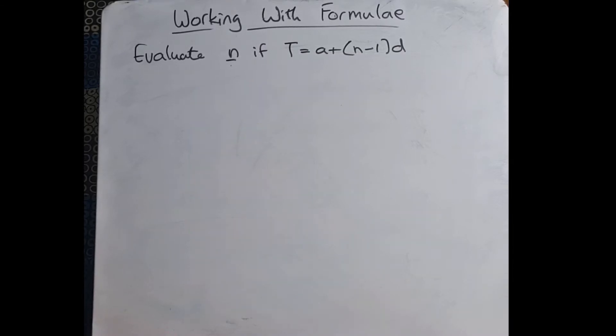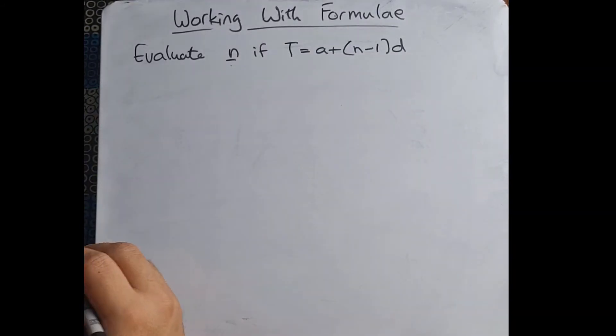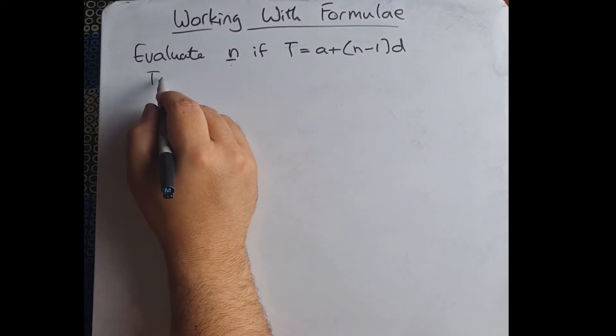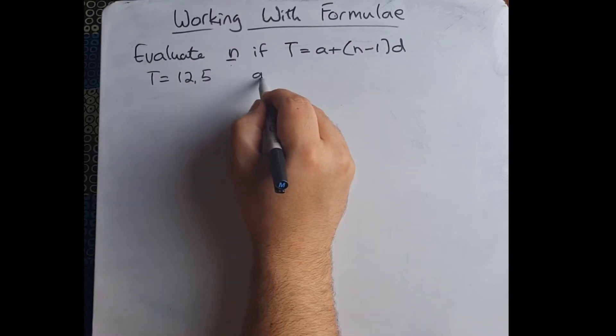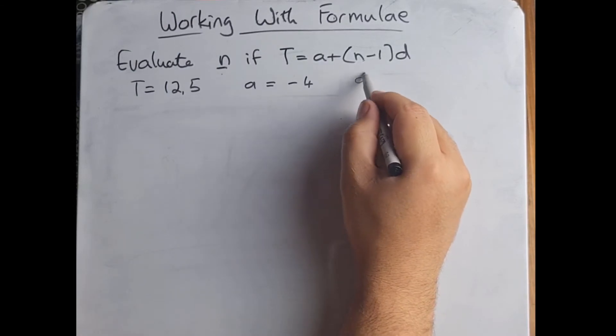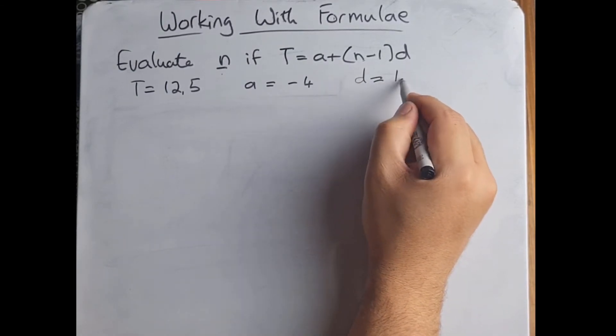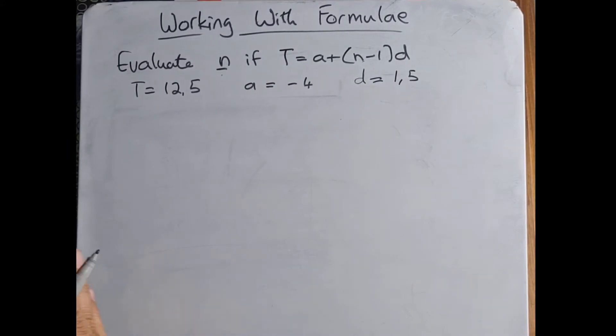Do we know any of these things at the moment? No. So they tell us the following: T = 12.5, a = -4, and d = 1.5.